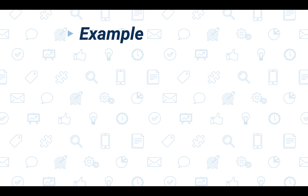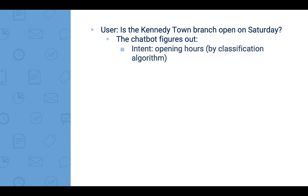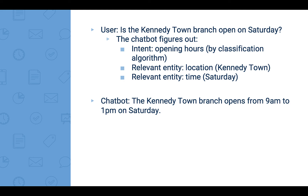Here is an example. A user asks, "Is the Kennedy Town branch open on Saturday?" Then the chatbot figures out that the intent is the opening hours, where there are two relevant entities: location and time. So the chatbot responds, "The Kennedy Town branch opens from 9am to 1pm on Saturday."